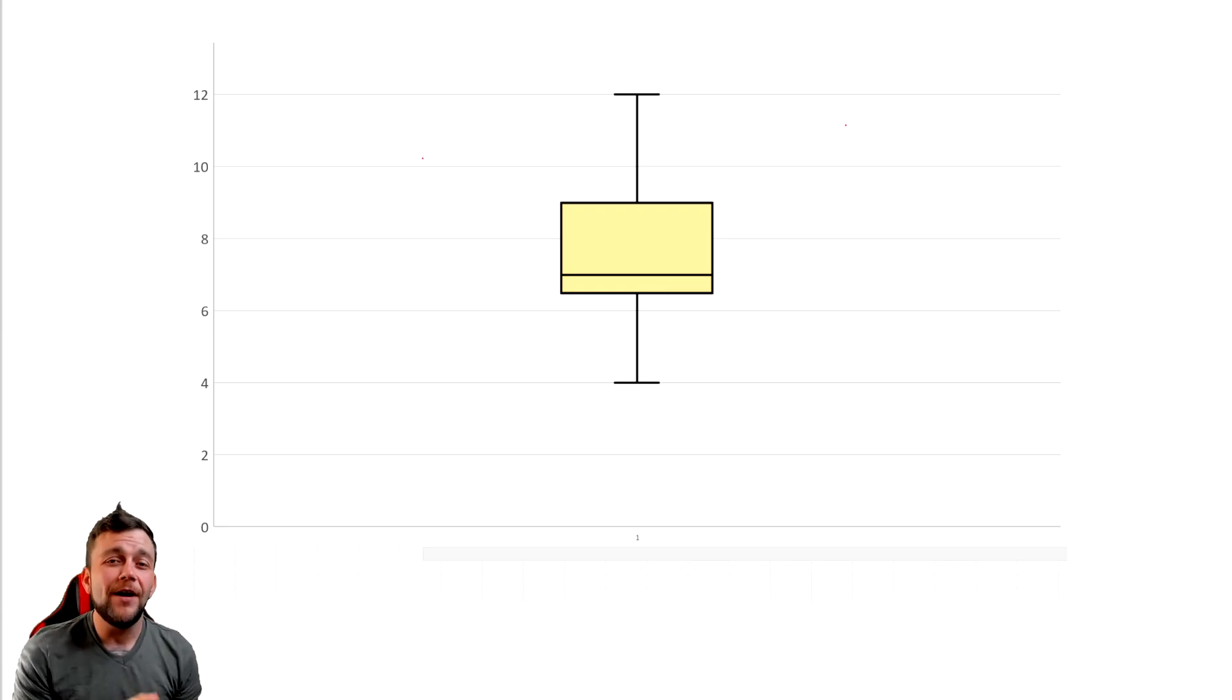We have our new maximum number, the very top line of the box plot, and that is at 12. So the maximum number of this data set is 12. Moving down from the maximum of 12, we run into the beginnings of our box. Remember, the top line of your box is the median of the top half of your data, also known as quartile 3. Here, it looks like quartile 3 can be found at 9.